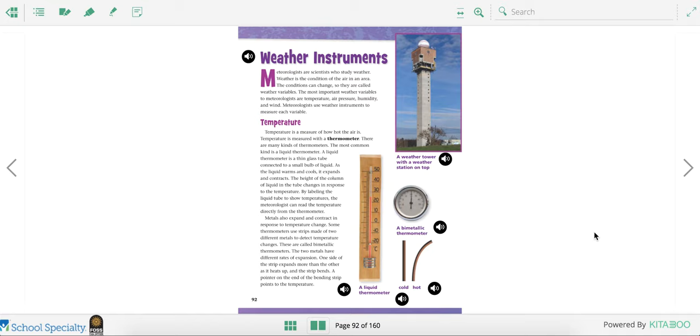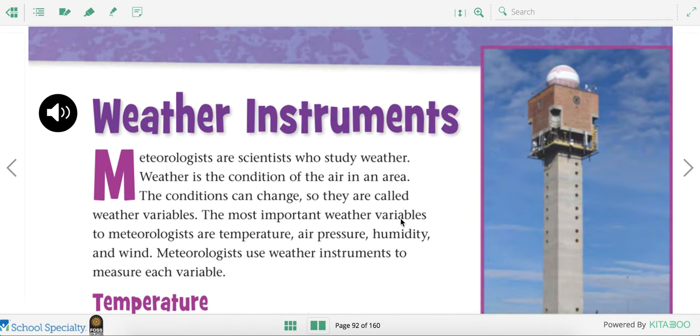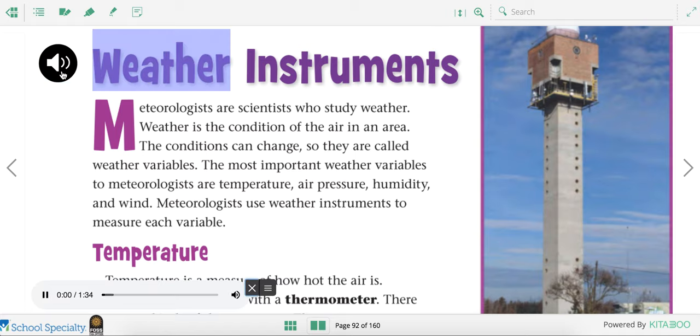These are the instruments that we use to measure the weather so we know what it's going to be like tomorrow. Meteorologists are scientists who study weather. Weather is the condition of the air in an area. The conditions can change so they are called weather variables.